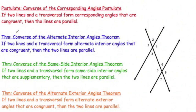Second one, converse of the alternate interior angles theorem. If two lines and a transversal form alternate interior angles that are congruent, then the two lines are parallel. So, for example, angles 4 and 5. If I know that 4 and 5 are alternate interior angles and they are congruent, then these two lines would be parallel.